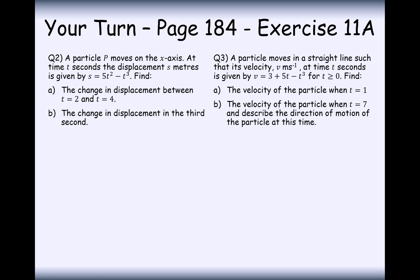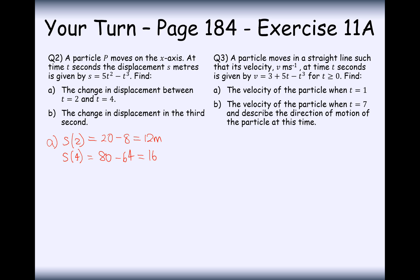Well done for having a go at those. Particle P moves on the x-axis at time t seconds; the displacement in metres is given by a formula in t. Find the change in displacement between t equals 2 and t equals 4. Substituting t equals 2: 5 times 4 is 20, minus 2 cubed is 8, giving 12 metres. The displacement when t equals 4: 16 times 5 is 80, take away 64, giving 16 metres. So the change in displacement is 4 metres.